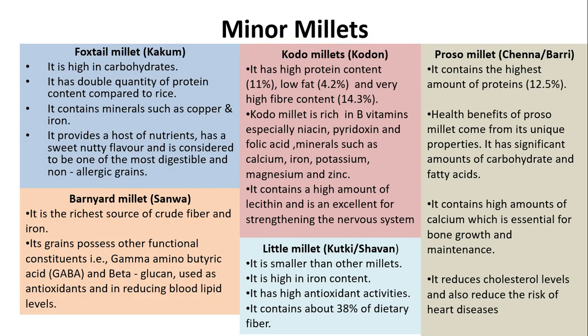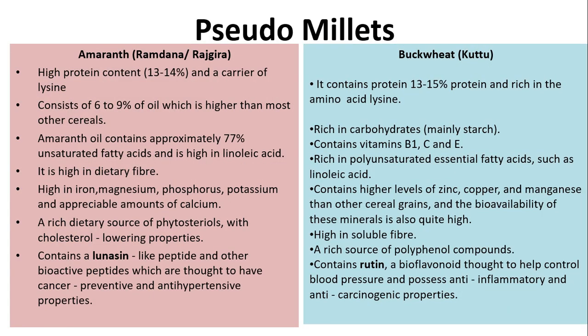Minor millets include foxtail millet (Kakum), kodo millet, little millet (Kutki), barnyard millet (Sanwa), and proso millet. Pseudo millets include amaranth, also known as Ramdana or Rajgira, and buckwheat, known as Kuttu. Amaranth has high protein content of 13–14% and is a carrier of lysine. Buckwheat contains 13–15% protein and is also rich in the amino acid lysine.